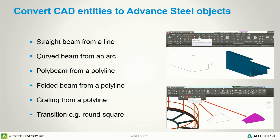There are some other possibilities, such as creating a polyline and converting it automatically to a folding beam. And by the way, you can get it unfolded automatically on drawings and NC files.